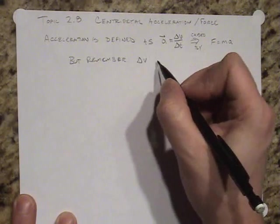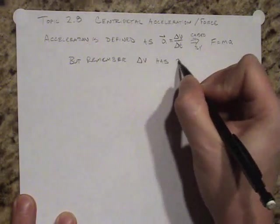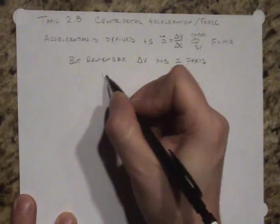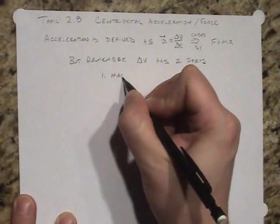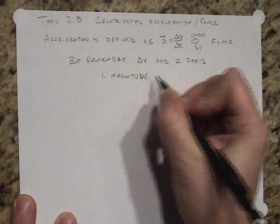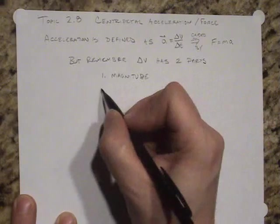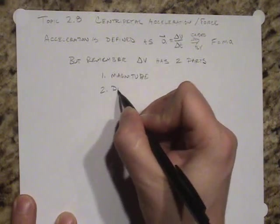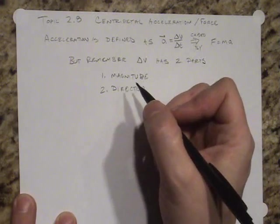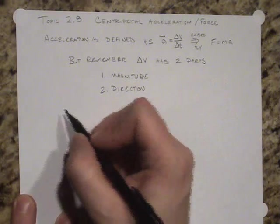But the thing that we need to remember about acceleration is that acceleration has two components. That change in velocity has two parts: first of all, the magnitude, and secondly it has direction.